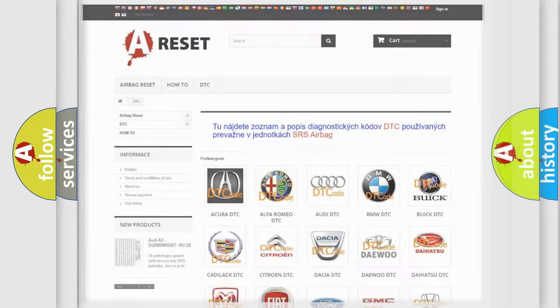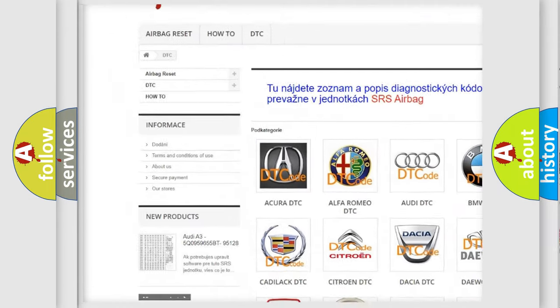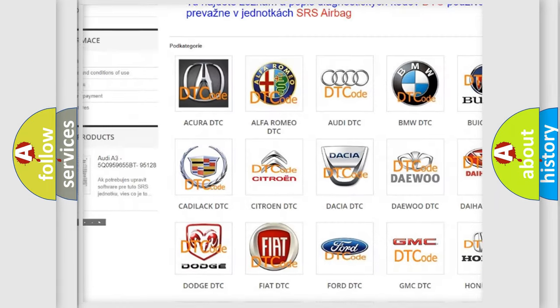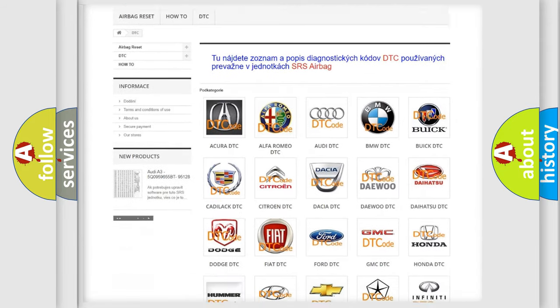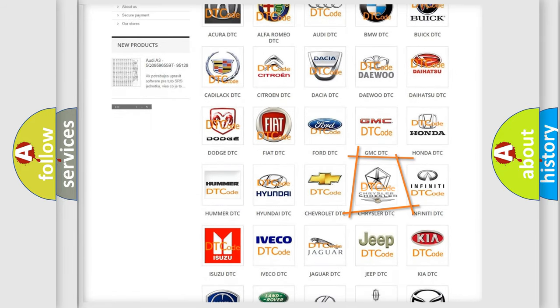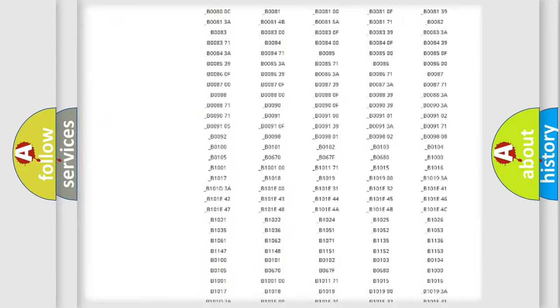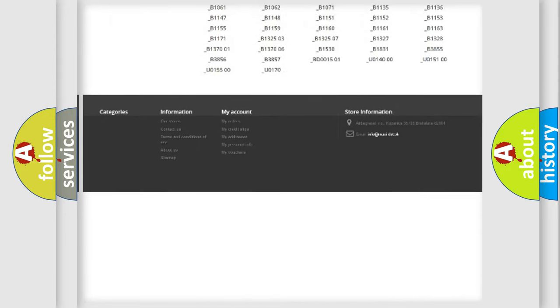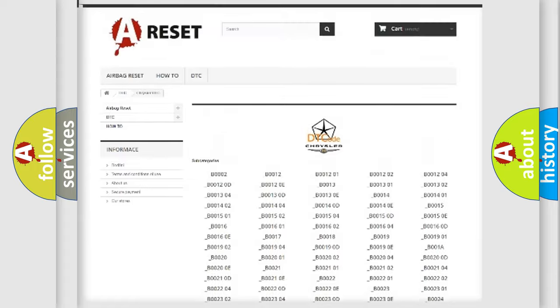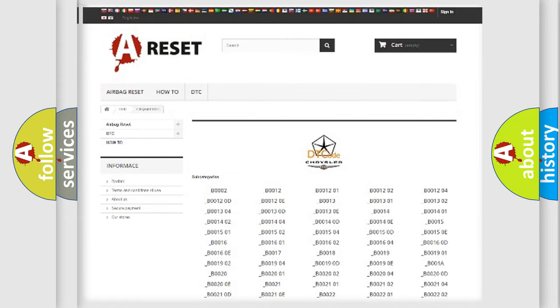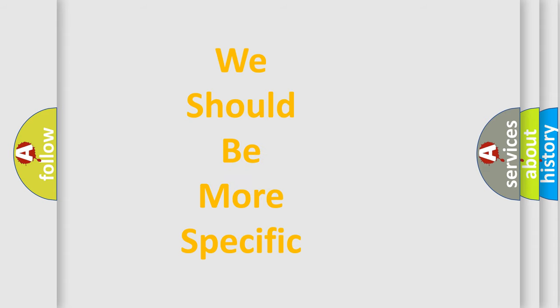Our website airbagreset.sk produces useful videos for you. You do not have to go through the OBD2 protocol anymore to know how to troubleshoot any car breakdown. You will find all the diagnostic codes that can be diagnosed in Chrysler vehicles, and many other useful things. The following demonstration will help you look into the world of software for car control units.